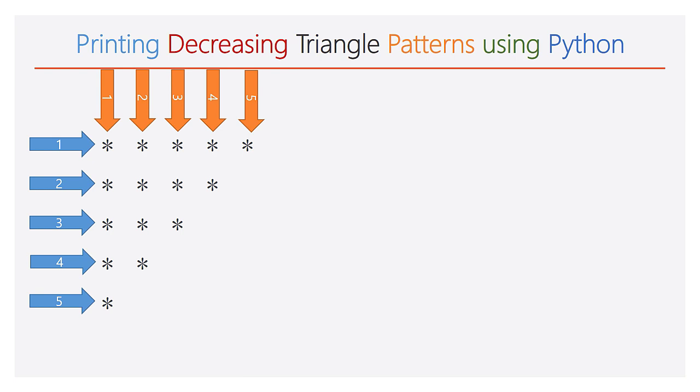Observe clearly, in the first line you have 5 stars. Hence, during the first iteration of the outer for loop, the inner for loop should be iterated 5 times. In the second line, during the second iteration of the outer for loop, the inner for loop should be iterated 4 times. Hence we will get 4 stars.